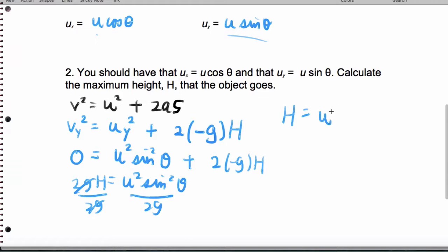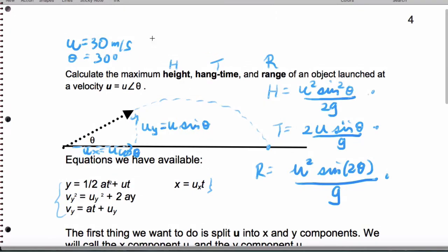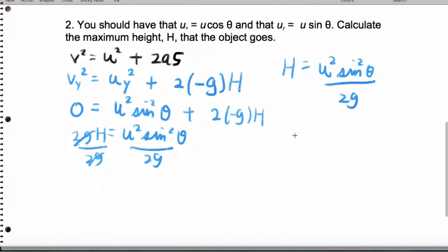To summarize, if I launch a projectile at a given speed, I can calculate its height from this formula. Just to show you, suppose the launch speed is 30 meters per second and the angle is 30, I can go ahead and plug that in here.